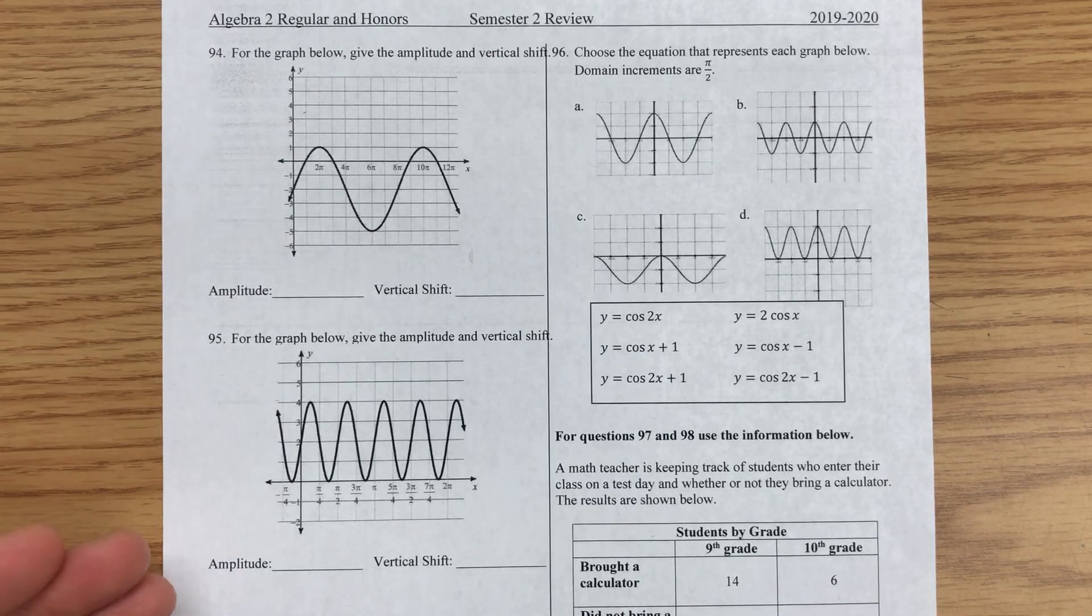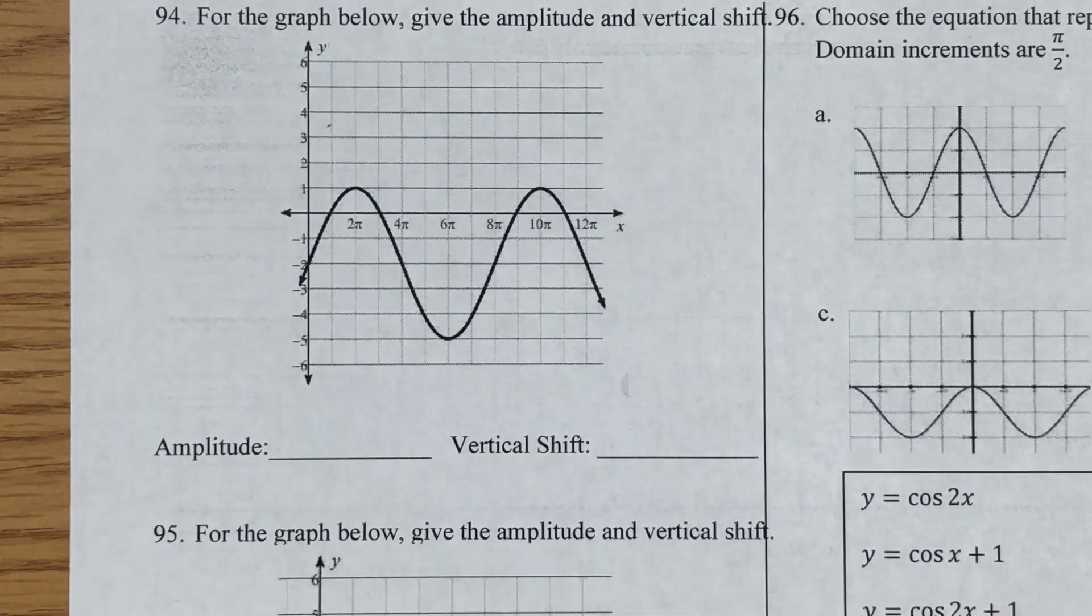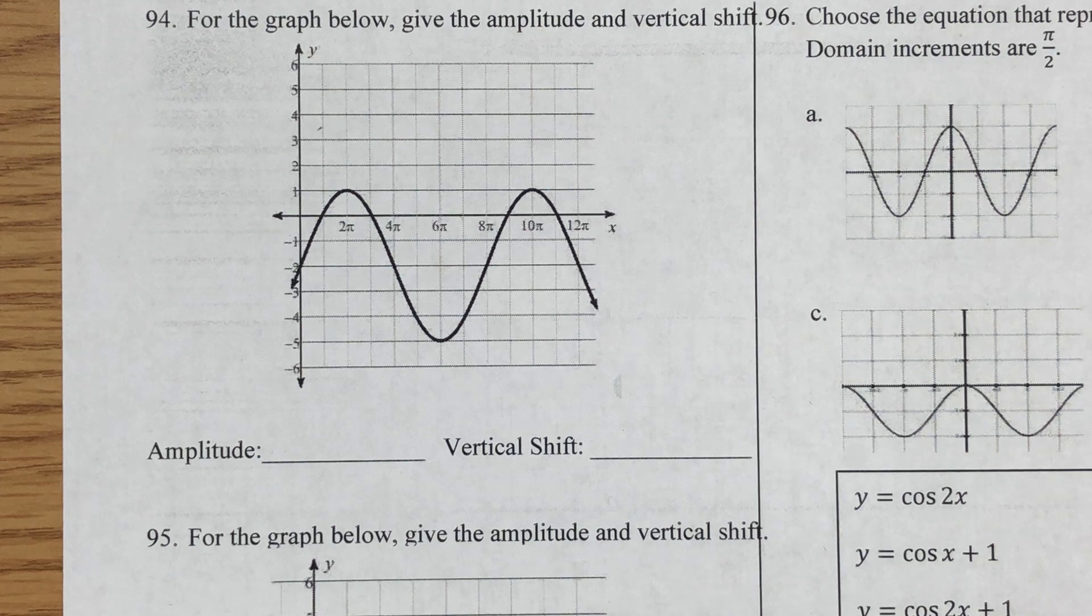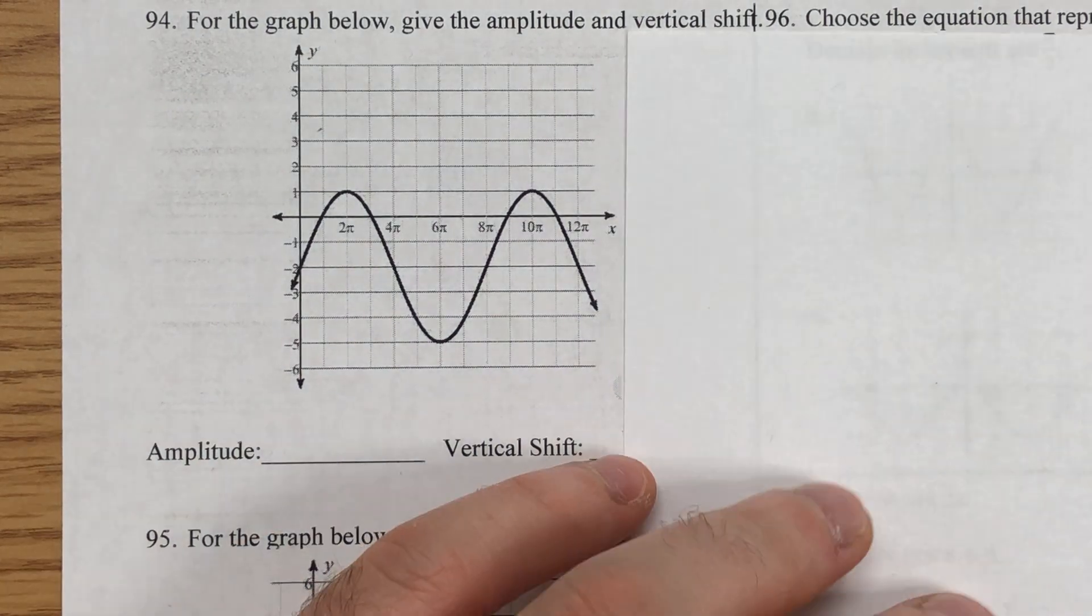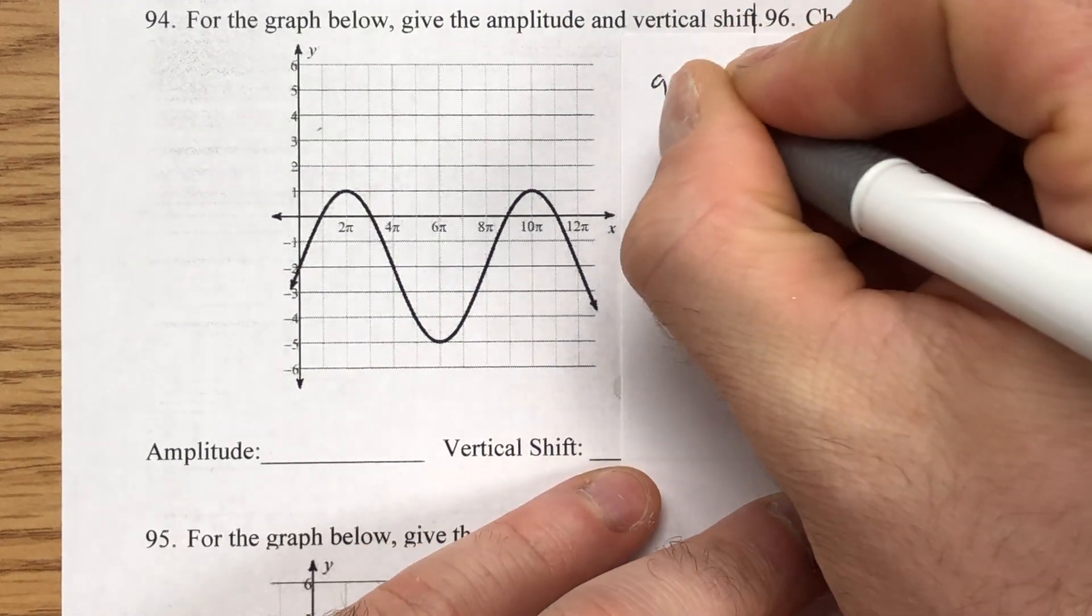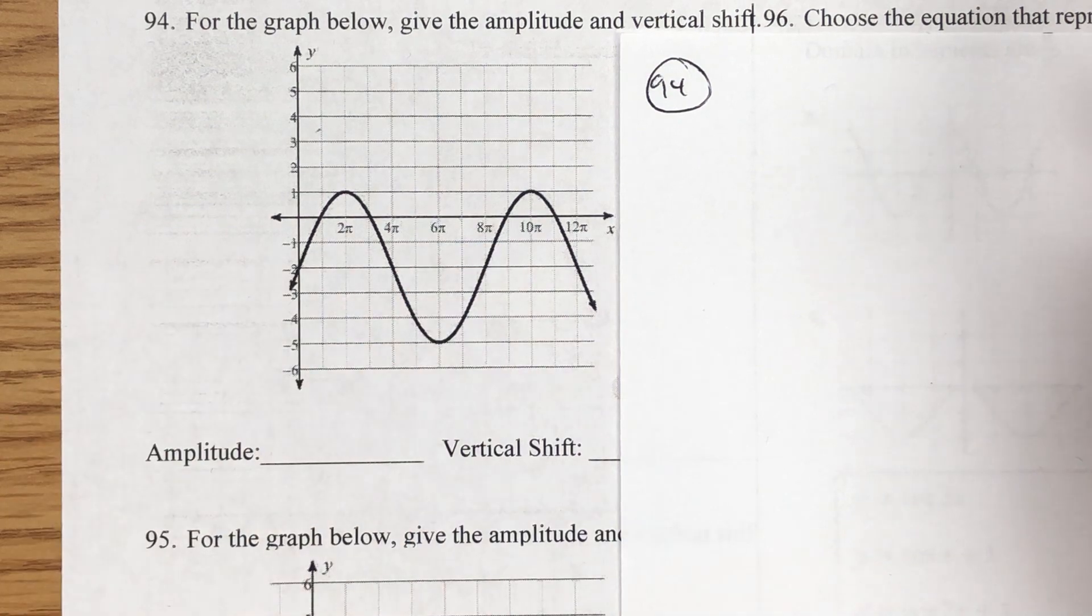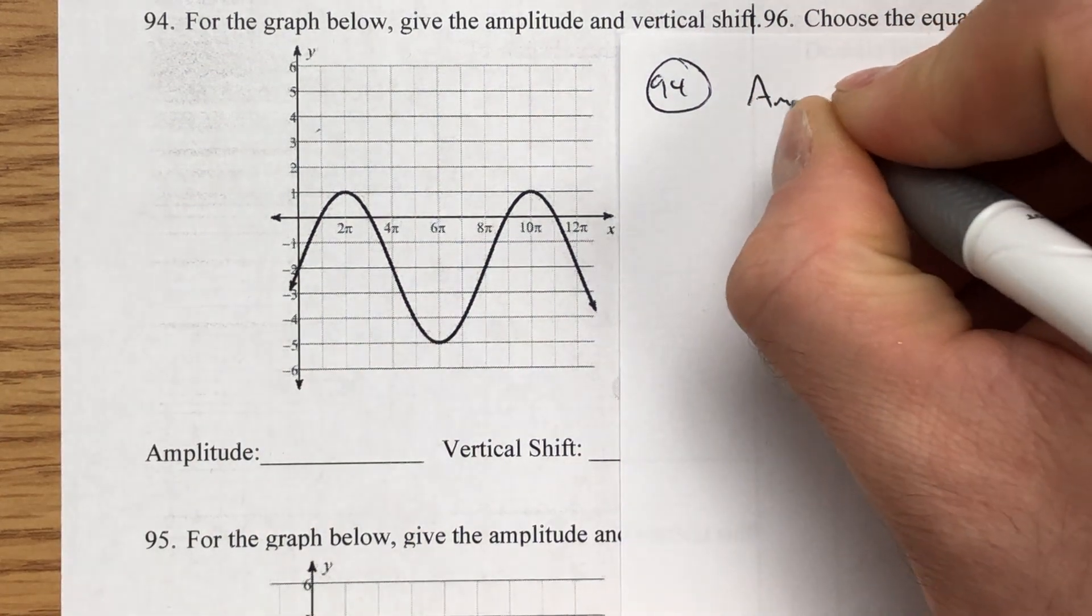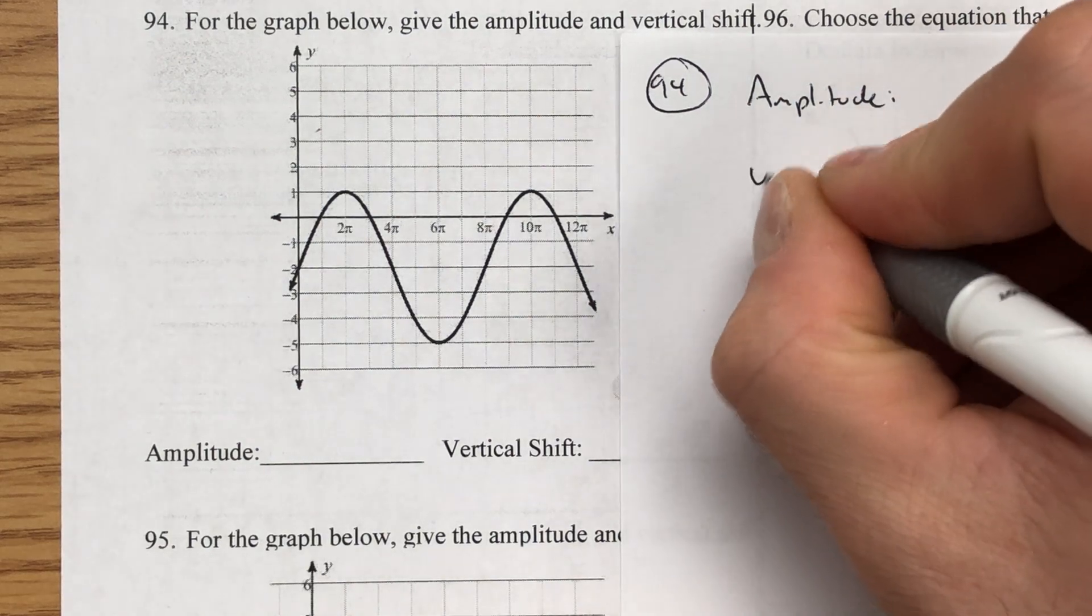Today we're going to be in column 94 through 95. This is a quick column, only two questions. So without further ado, let's jump straight into question 94. For question 94, we're asking two questions: what is the amplitude and what is the vertical shift of this graph? So we want to find the amplitude and the vertical shift.